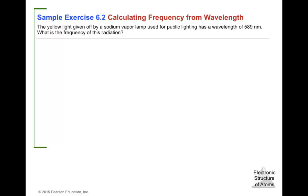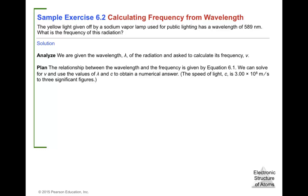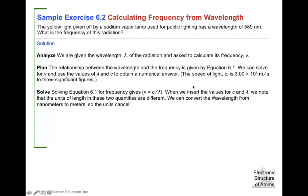Example: the yellow light from a sodium vapor lamp used for public lighting has a wavelength of 589 nanometers. What is the frequency of this radiation? We use the equation c = λν and solve for frequency: ν = c / λ. We have the speed of light and we have the wavelength. We need to convert 589 nm to meters using the definition that 1 nm = 10⁻⁹ m.